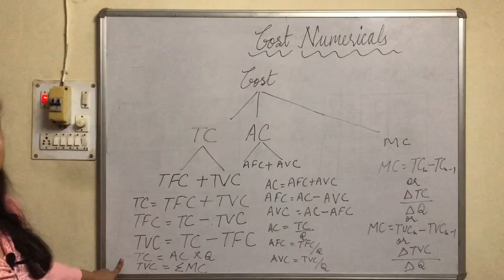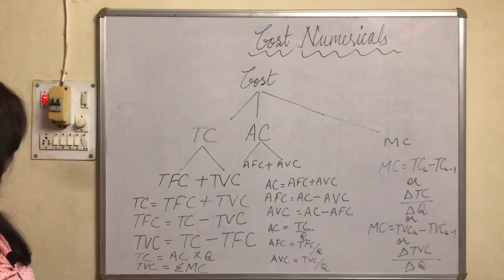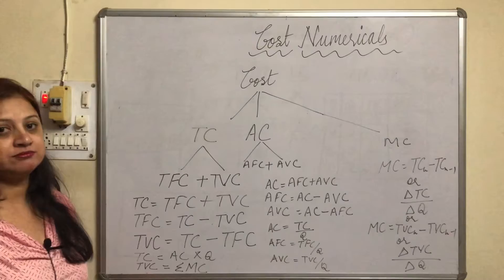Total cost can also be found with AC. How? TC equals AC into Q. And if you do the summation of MC then you will get TVC